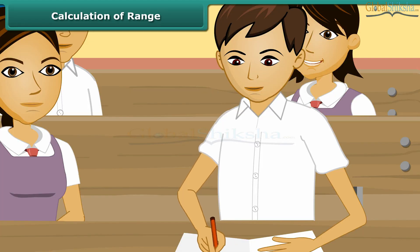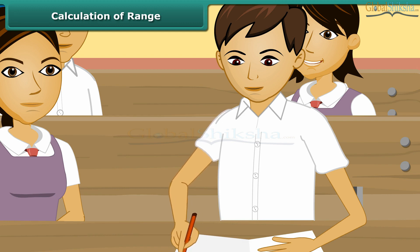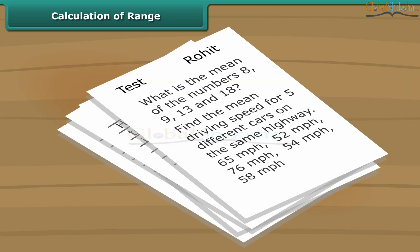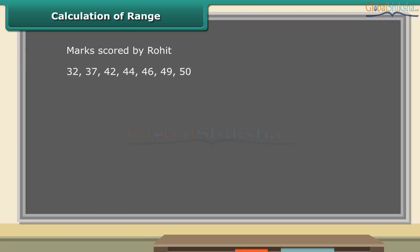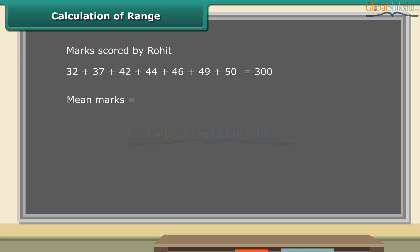Rohit is an intelligent and very studious boy in the class. He gave his maths test 7 times to improve his marks. The data shown here displays the marks scored by Rohit. Can you calculate the mean test marks of Rohit? Let us first add up the marks — the sum is 300. We know he gave the maths test 7 times, so the mean marks of Rohit are equal to 300 divided by 7, which is equal to 42.86.